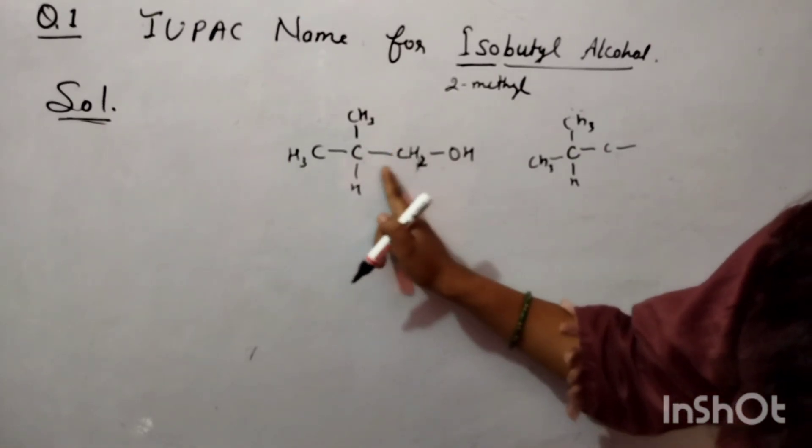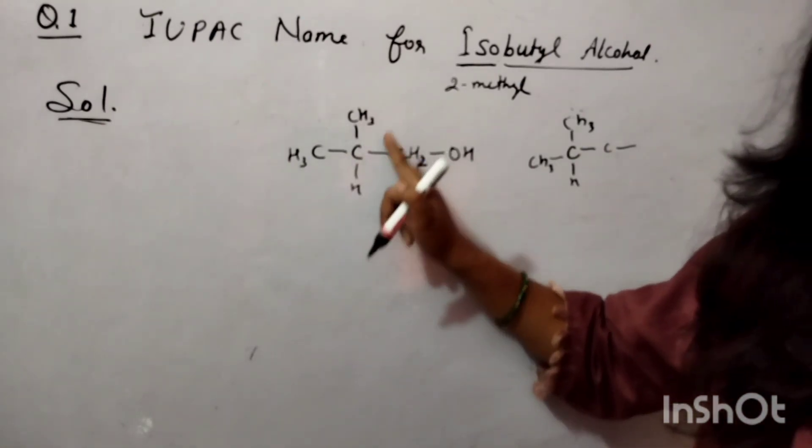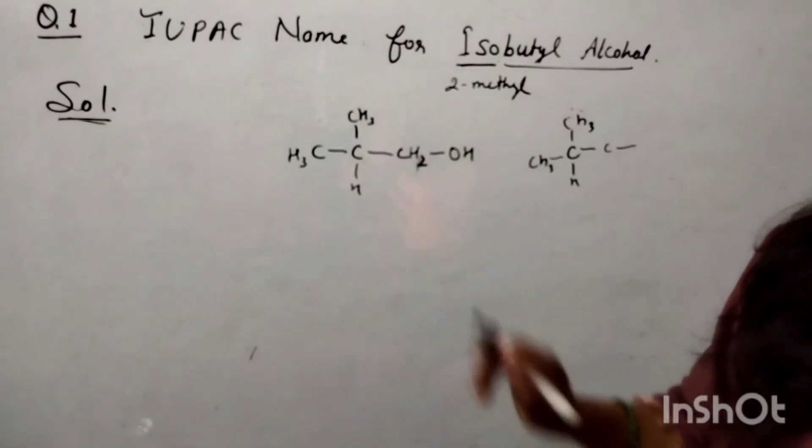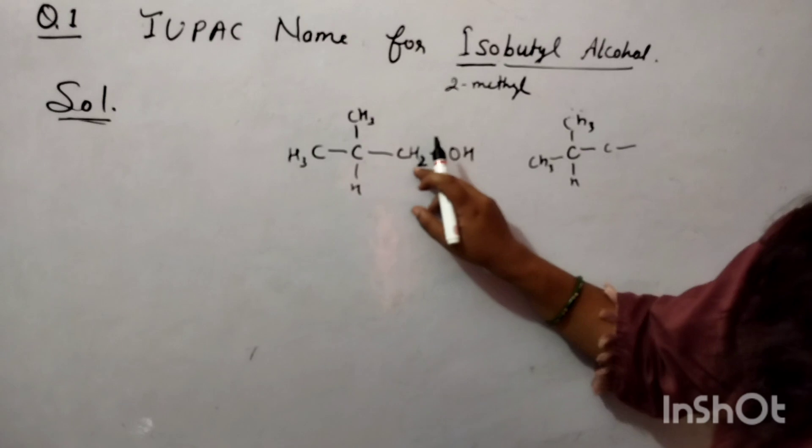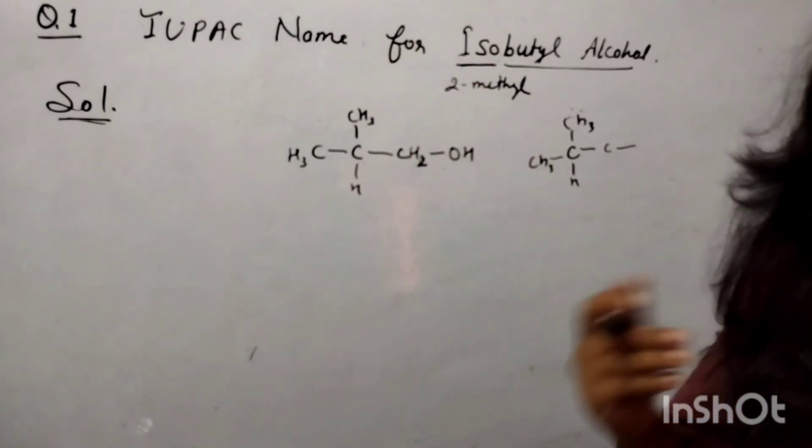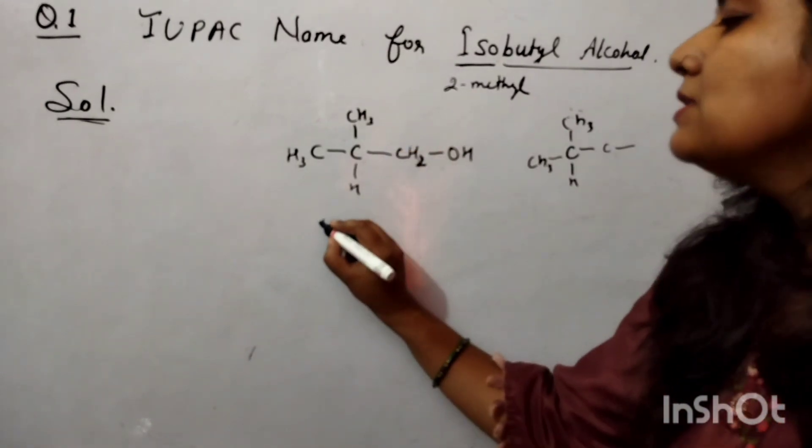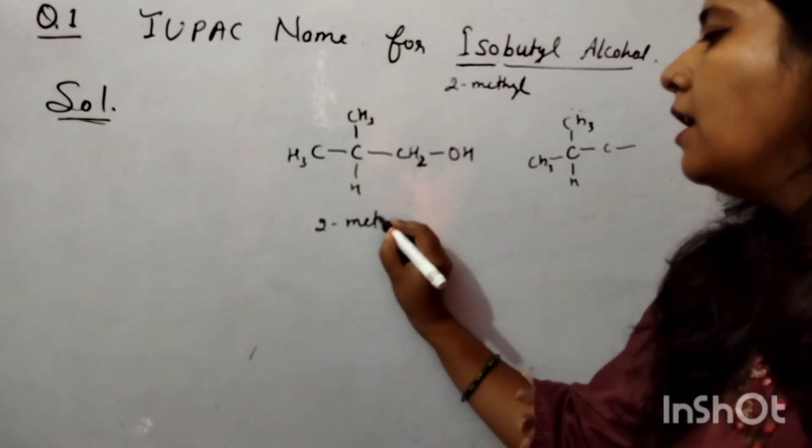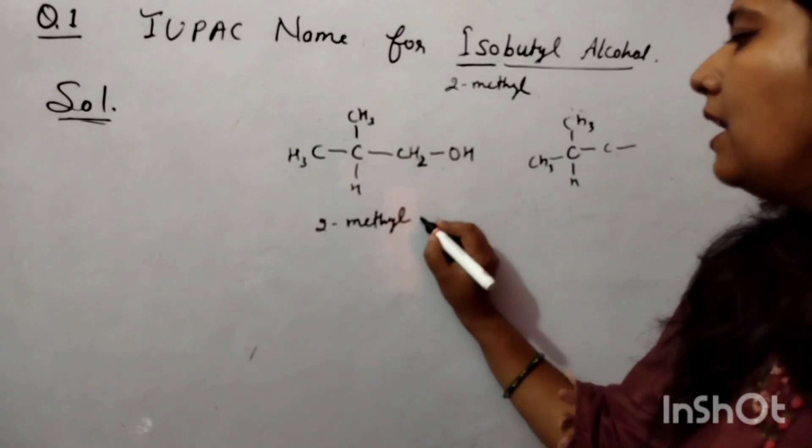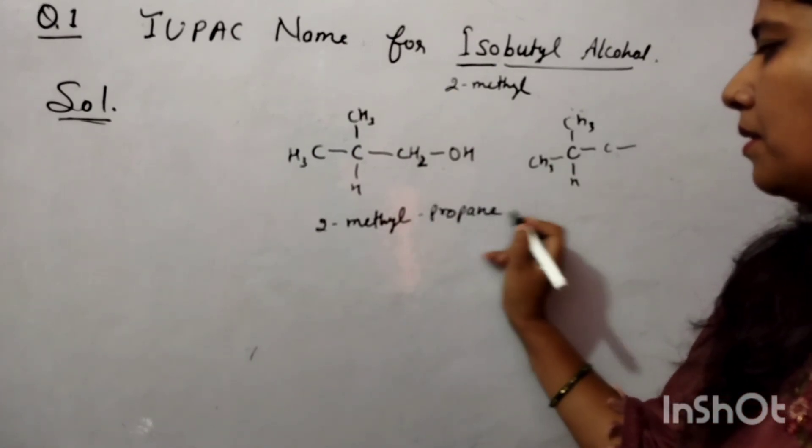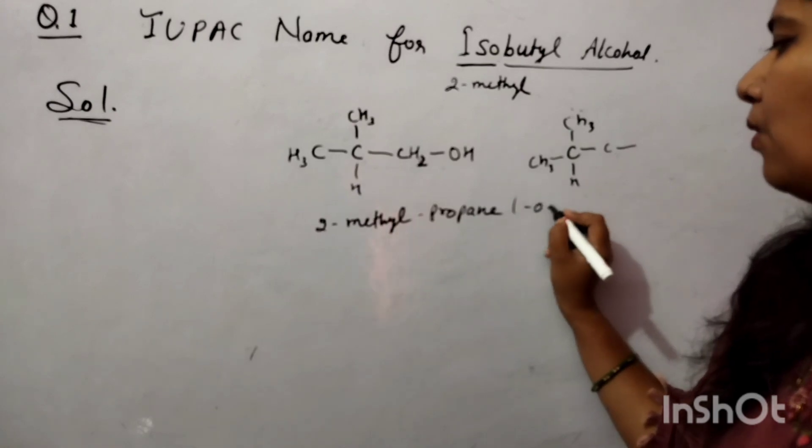As you are drawing the 4 carbons in a way that the second carbon must have a 2-methyl group, then definitely you can name it iso. So the proper IUPAC name for this compound is 2-methyl propane 1-ol.